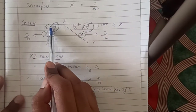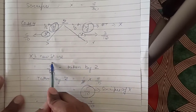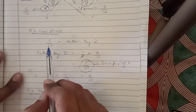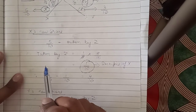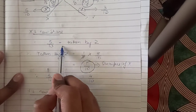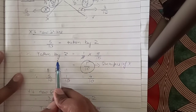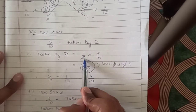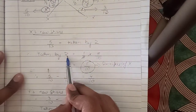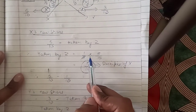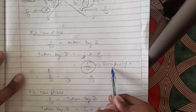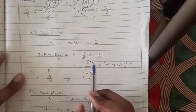Z has taken 1/5 of X's share. X had 5/10. Taken by Z = 1/5 × 5/10 = 1/10 (the fives cancel). So X's sacrifice is 1/10. X's new share = 5/10 − 1/10 = 4/10.